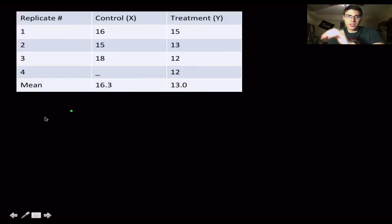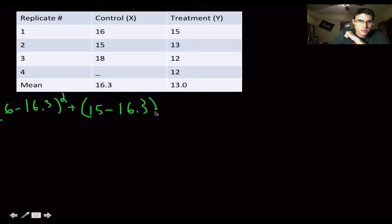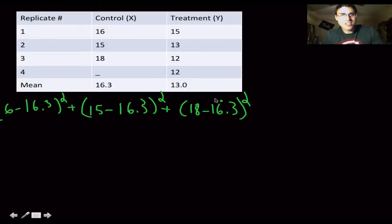And now we've got to enter this whole thing in. So I'm going to do pooled variance real quickly on this. It is 16 minus 16.3 squared, plus 15 minus 16.3 squared, plus 18 minus 16.3 squared. So that's all of our x, all of our control.